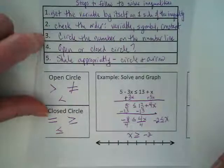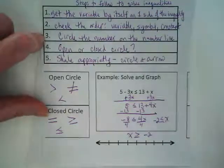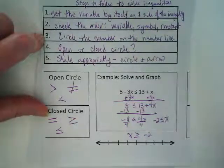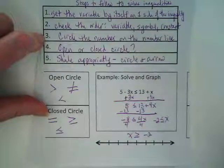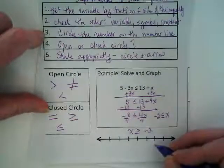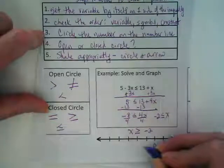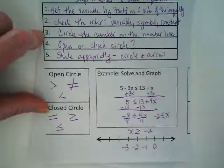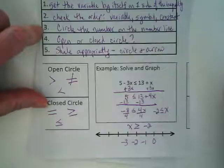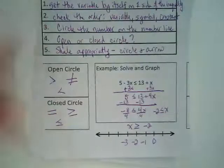Okay, step three says circle the number on the number line. That's great, but first we actually have to put numbers on the number line, don't we? We're trying to graph negative 2. What numbers do you guys want to put on there? Zero, negative 1, negative 2, negative 3. That works, right?